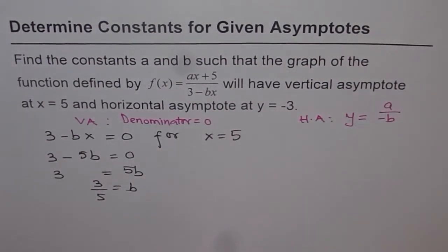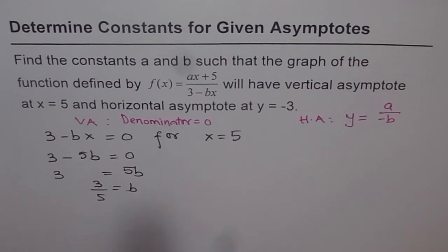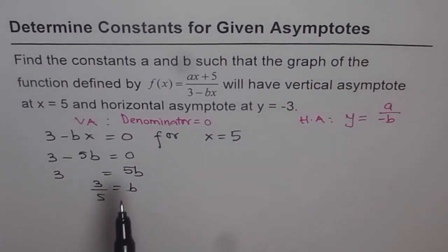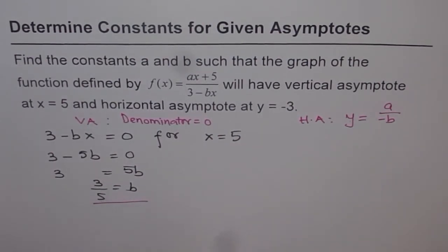So that is your horizontal asymptote. Now we are already given here horizontal asymptote is y equals minus 3. And now we have also found that b is 3 over 5. So we can use this value of 3 over 5 for b also. So let us substitute these values and check our answer.